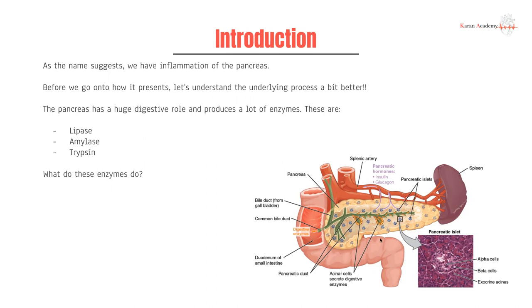How does this happen? You have your acinar cells that generate or secrete digestive enzymes. These then travel through the pancreatic duct and join with the bile duct from the gallbladder to form the common bile duct, which drains into the second part of the duodenum through the ampulla of Vater.